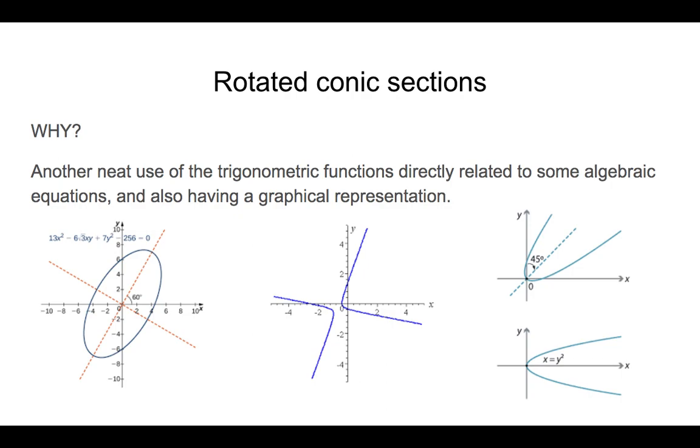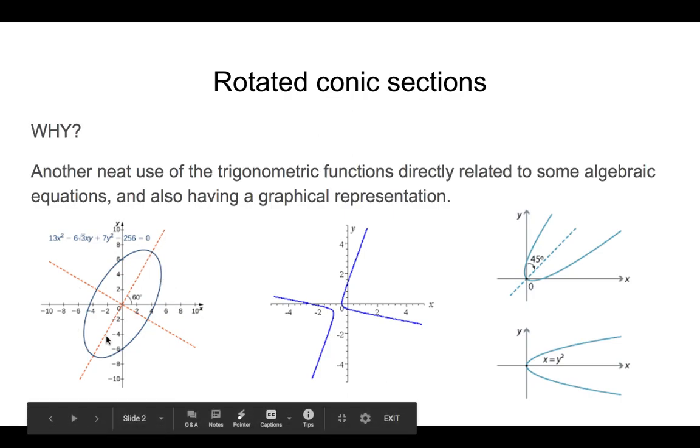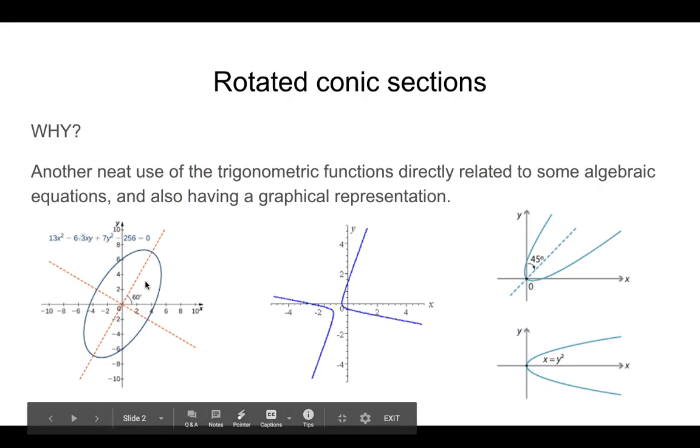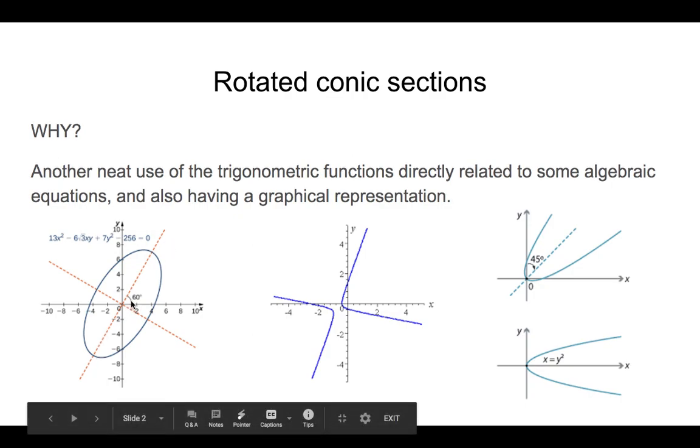And by rotated conic sections, I mean, remember the conic sections are ellipses, hyperbolas, parabolas, and circles. And rotated means that they are rotated instead of the usual form. You have ellipses like this one in which the axes have been rotated. You don't have the regular set of axes perpendicular to each other, forming like a cross. It's rotated a little bit, in this case 60 degrees.